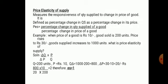Substituting in the formula: change in quantity is 800, change in price is 20, original price is 10, original quantity is 200. After cancellation, the answer is 2. Therefore, the price elasticity of supply is greater than 1, since 2 is greater than 1.